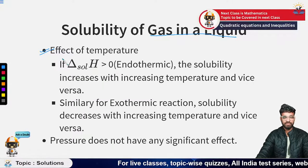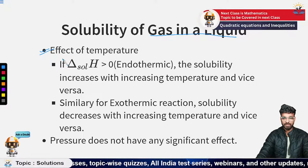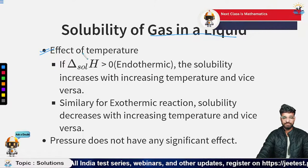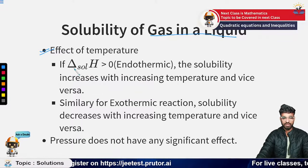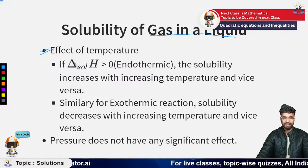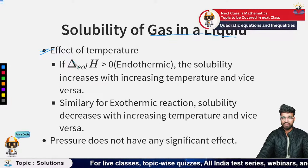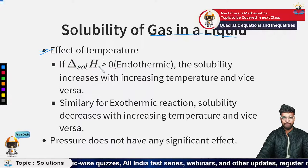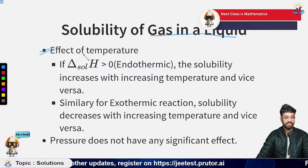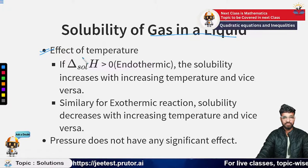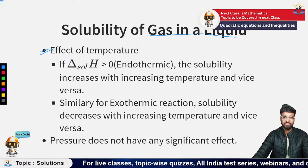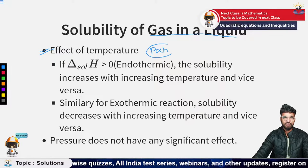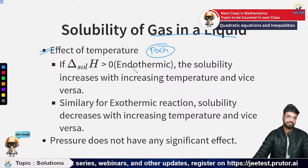The effect of temperature simply follows Le Chatelier's principle. This principle says that if you make a change to a system at equilibrium, the reaction will proceed in a direction to minimize that change. For example, if you increase pressure, the reaction proceeds in the direction with a greater number of moles — which is consistent with PV = nRT.